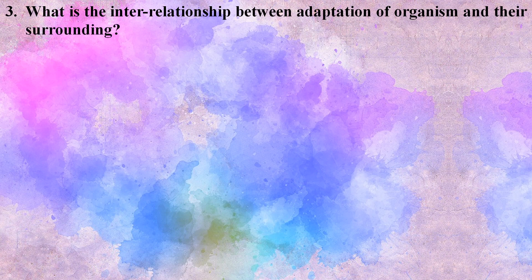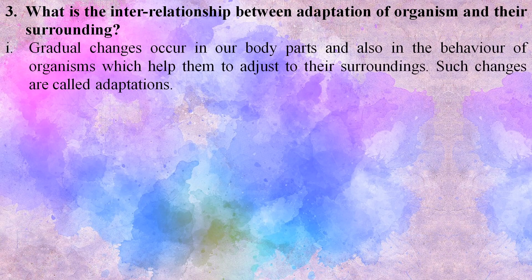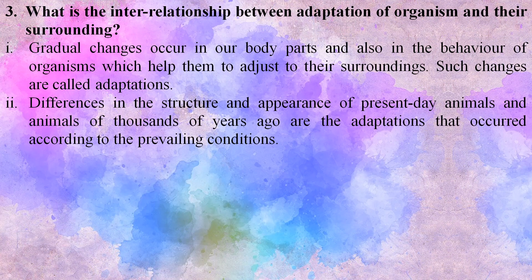Third, what is the interrelationship between adaptation of organisms and their surroundings? Gradual changes occur in our body parts and also in the behavior of organisms, which help them to adjust to their surroundings. Such changes are called adaptations. Differences in structure and appearance of present-day animals and animals of thousands of years ago are the adaptations that occurred according to the prevailing conditions.